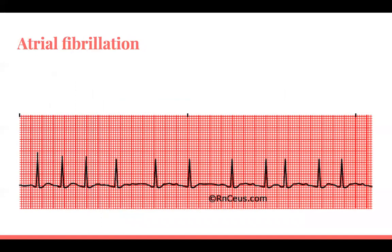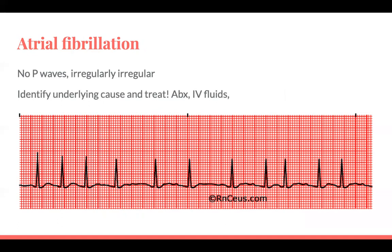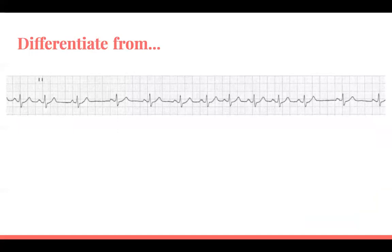AF — no P-waves and irregularly irregular. Identify the underlying cause and treat it: antibiotics, IV fluids. If alcohol caused the first presentation, it's often known as holiday heart syndrome and IV fluids are the treatment. One thing often mistaken for AF is sinus arrhythmia — the rhythm is irregularly irregular but P-waves are present, sometimes varying in morphology. It's usually benign and doesn't need treating unless symptomatic. AF is also sometimes confused with Mobitz type 1 second-degree AV block and frequent premature atrial ectopics.